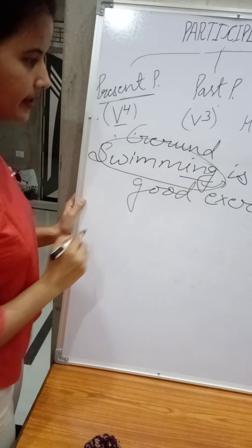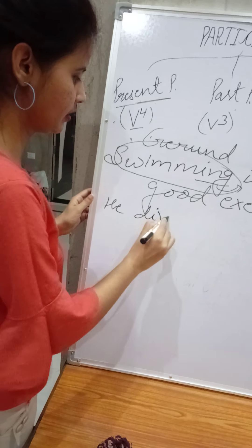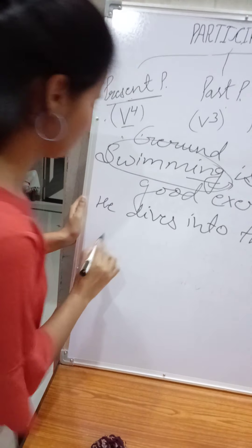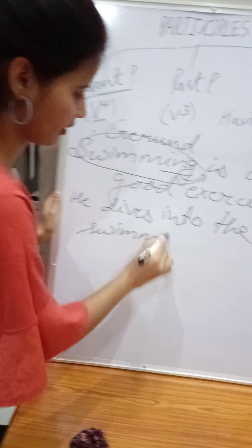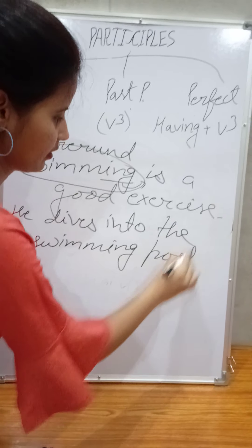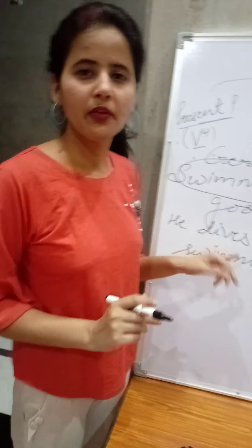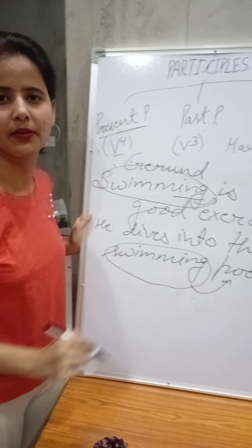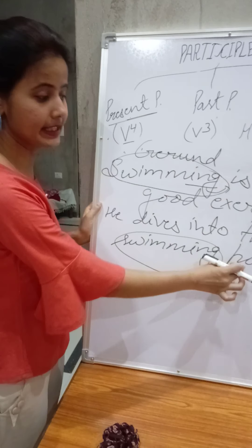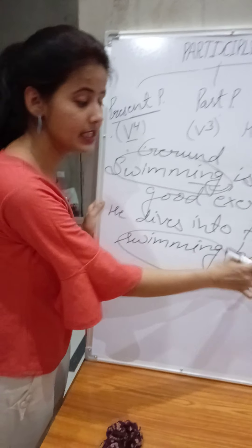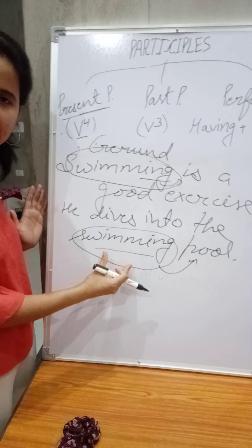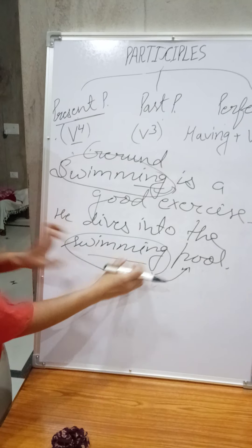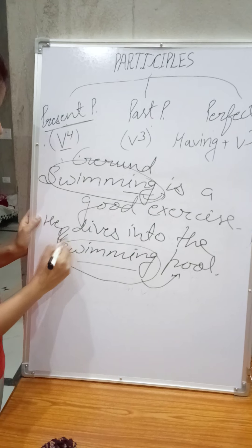The next example: he dives into the swimming pool. Which word consists of ING? Swimming again. Just after swimming, a noun is there — 'pool' — and this word is describing it. What kind of pool? A swimming pool. So this word clearly describes a noun, so it will be a participle because it functions as an adjective here.